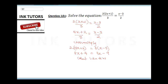Collecting like terms — move all x terms to one side and numbers to the other: 8x minus 3x equals minus 9 minus 4, giving 5x equals minus 13. Therefore x equals minus 13 divided by 5. Converting to a mixed number, the final answer is x equals negative 2 and 3 over 5.